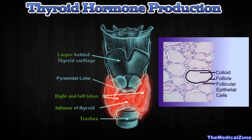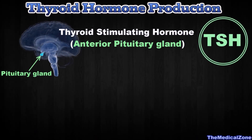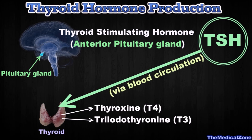Follicular epithelial cells surround the follicle, and the substance in the follicle is also referred to as the colloid. The follicular cells play a role in the production of the thyroid hormones. Under the influence of thyroid stimulating hormone, or TSH, secreted by the anterior pituitary gland, the thyroid will manufacture and secrete T3 and T4, thereby raising their blood levels. The thyroid gland also secretes calcitonin, an important hormone for calcium metabolism, which we are not going to discuss in this video.